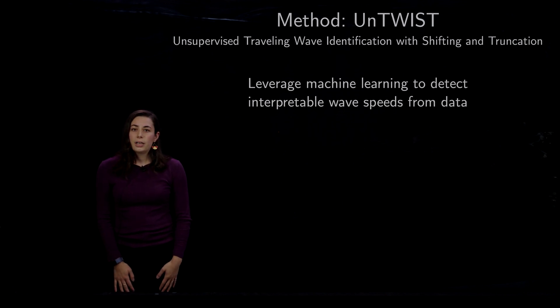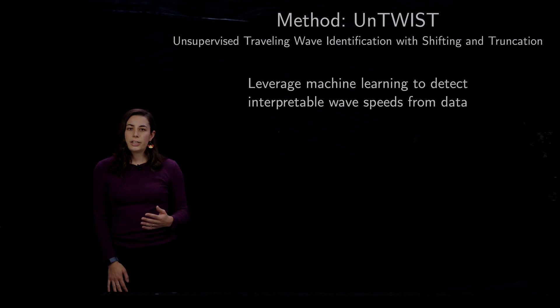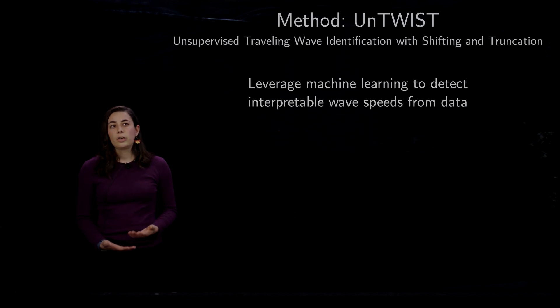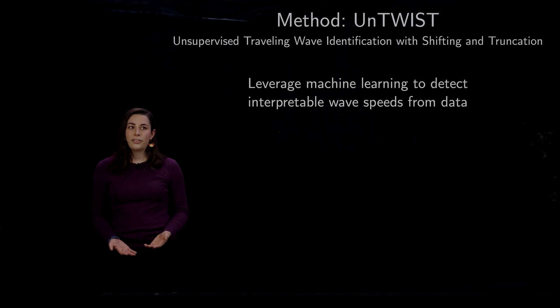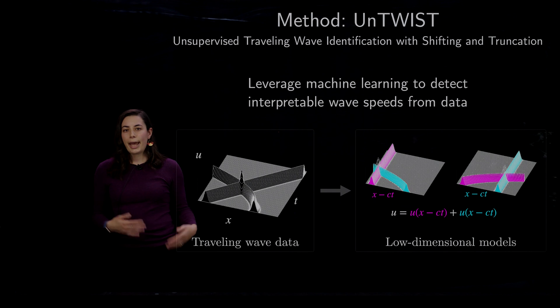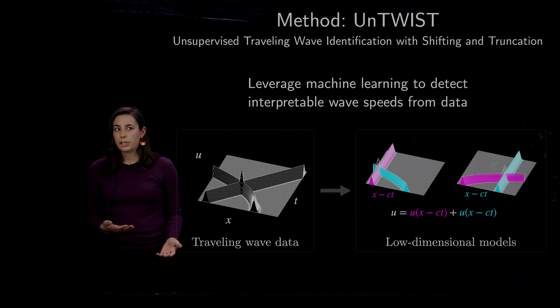So one approach that many people have done to alleviate this problem is to first shift the data into a traveling wave frame so that those traveling waves appear stationary. So our method that we've developed is called unsupervised traveling wave identification with shifting and truncation. And we're going to use machine learning to detect interpretable wave speeds so that we can shift the data into these moving coordinate frames given by X minus CT and create low dimensional models in the moving coordinate frames so that the waves appear stationary.